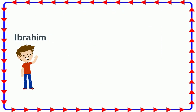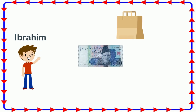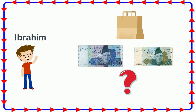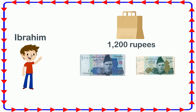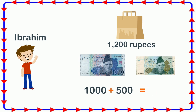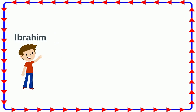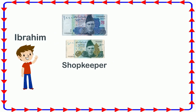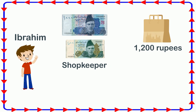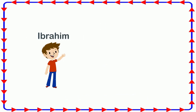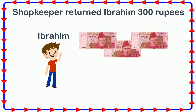Then, Ibrahim buys a bag and gives a 1000 rupees note and a 500 rupees note to the shopkeeper. How much money does the shopkeeper give Ibrahim back? The price of the bag is 1200 rupees, while the money he gives is 1000 + 500 = 1500 rupees. The shopkeeper subtracts the price of the bag from the amount Ibrahim gave him: 1500 − 1200 = 300 rupees. So the shopkeeper returns Ibrahim 300 rupees in the form of 300 rupees notes.